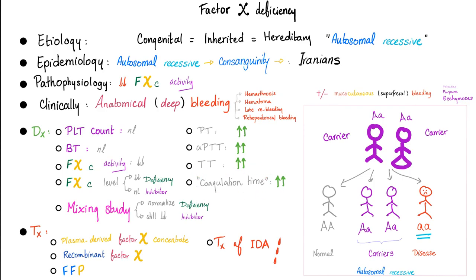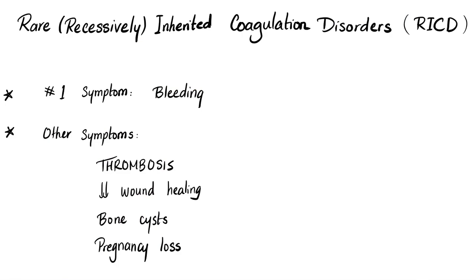Coagulation time is a historical test no longer used; it will be prolonged because it encompasses the entire extrinsic, intrinsic, and common pathways. A mixing study will help differentiate between a deficiency and an inhibitor. For treatment: if the patient lacks factor 10, give factor 10. If it's an inhibitor, give factor 10a. If your hospital doesn't have factor 10, give fresh frozen plasma, which contains all the factors. Since there is lots of bleeding, iron deficiency anemia is common — so treat the anemia.